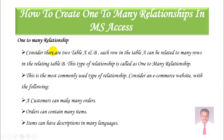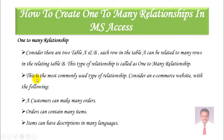Let us consider there are two tables, table A and table B. Each row in table A can be related to many rows in table B — this is called a one-to-many relationship. This is the most commonly used type of relationship. It's very common.